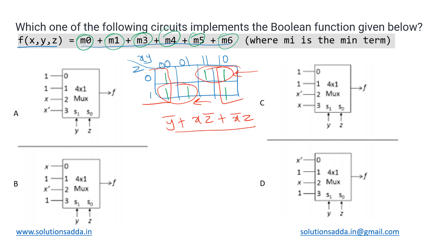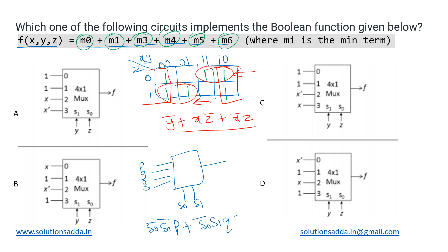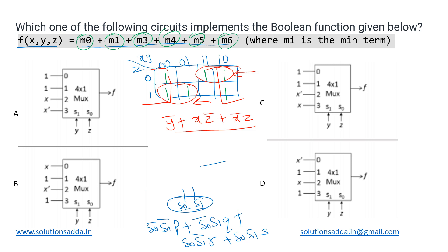Now we need to check all the multiplexers and see which gives this output. To evaluate a 4×1 multiplexer: if s0 and s1 are the select bits and p, q, r, s are the inputs, the output is s0̅s1̅·p + s0̅s1·q + s0·s1̅·r + s0·s1·s. We take all combinations of s0 and s1 — just like a truth table — and AND each with the corresponding input.